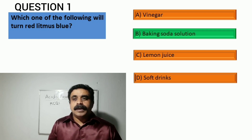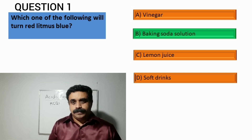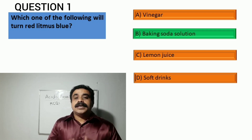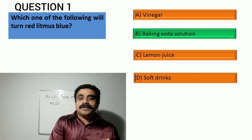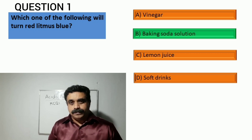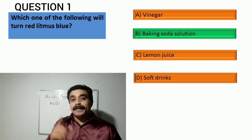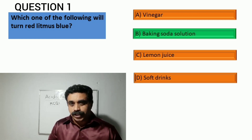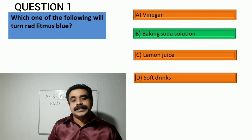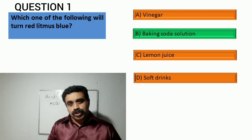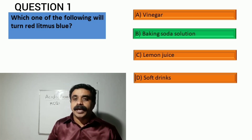The answer is option B, baking soda solution. Red litmus turns blue in a basic solution, and among the options only baking soda solution is basic in nature. The rest are all acidic, including soft drinks which contain carbonic acid.